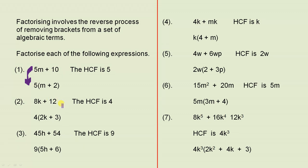The second one. What is the largest number? You can see that it has to be a number, because there's no letter here. What's the largest number that divides into 8k and into 12? The answer is 4. Put the 4 outside. 4 times what gives me 8k? 2k. 4 times what gives me 12? 3. So inside the brackets we have 2k plus 3, and that's the answer.